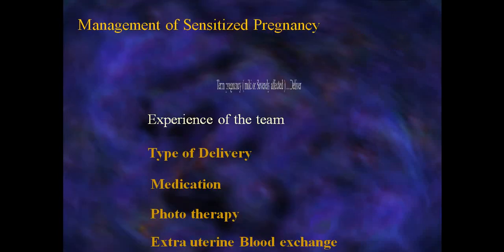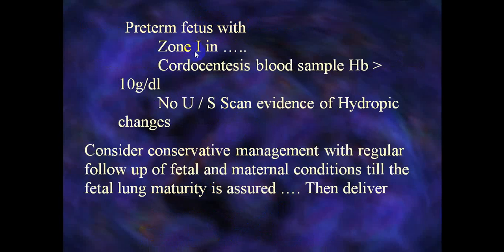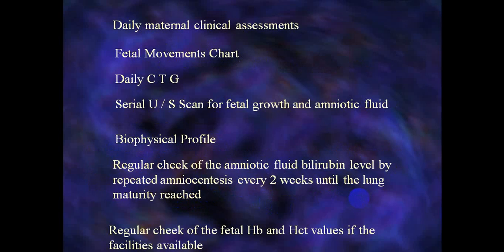Management of sensitized pregnancy depends on gestational age, severity of fetal affection, available facilities, experience of the team, type of delivery (vaginal or abdominal), and medications such as phototherapy and exchange blood transfusion. For a term fetus in Zone 1 of the Liley chart with hemoglobin above 10 g/dL and no ultrasound evidence of hydrops: consider conservative management with regular follow-up, ensure fetal lung maturity, then deliver. Daily maternal clinical assessment, fetal movement charting, and cardiotocography are performed.